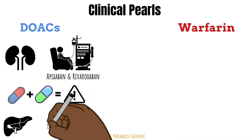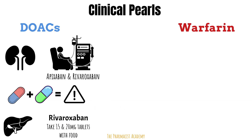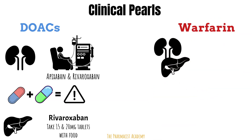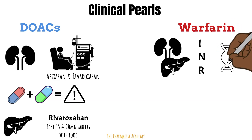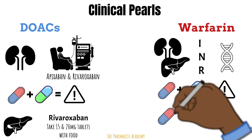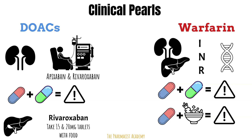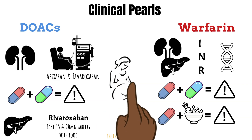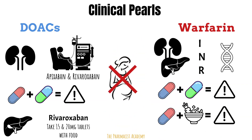Rivaroxaban 15 mg and 20 mg tablets should be taken with food due to improved bioavailability. For patients with severe renal and/or hepatic disease, monitor them closely for bleeding while on warfarin. Because warfarin is unpredictable in its level of anticoagulation, we monitor it using the INR. Research has shown that genetic variation influences drug metabolism in response to warfarin therapy; the package insert includes dosing recommendations based on expression of CYP2C9 and vitamin K epoxide reductase complex. Warfarin has significant drug-drug interactions, and foods with vitamin K can also impact anticoagulation levels. Both drug classes are typically avoided in pregnancy; the preferred anticoagulants are heparin and low molecular weight heparin.